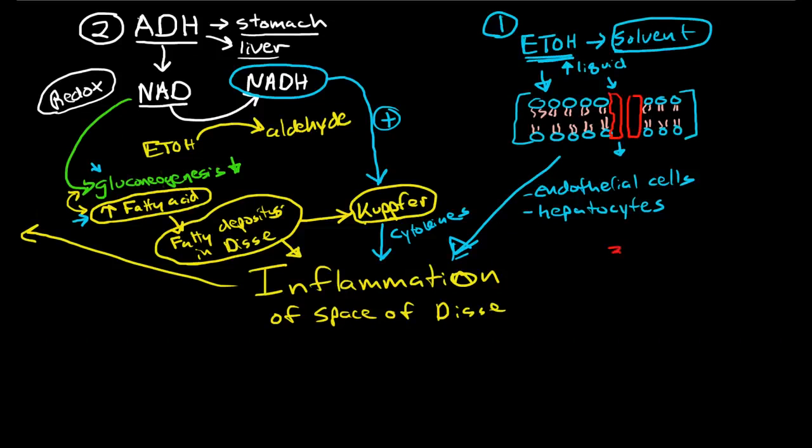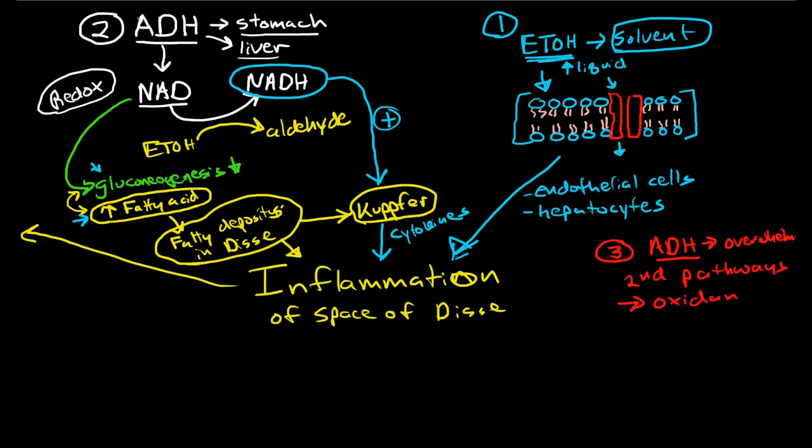And there's a third process in play here. And the third process would be that when we drink very large amounts of alcohol, we actually overwhelm our ADH system. We've used up every ADH enzyme and coenzyme that we have available. And so the liver needs to go to secondary pathways to break down.